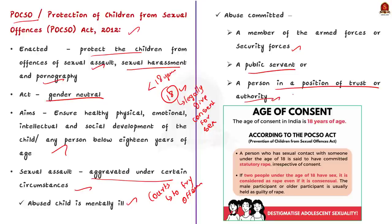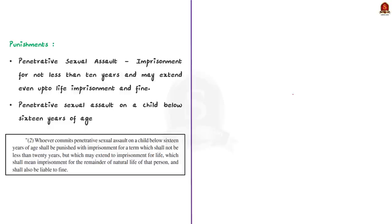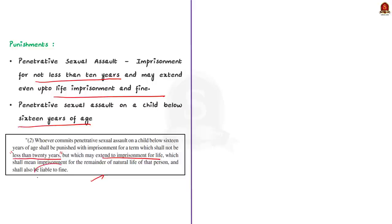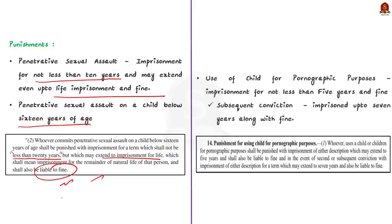Coming to the punishments under the Act: penetrative sexual assault on a child can lead to imprisonment of not less than 10 years and may extend up to life imprisonment and a fine. Whoever commits penetrative sexual assault on a child below 16 years of age shall be punished with imprisonment of not less than 20 years, which may extend to life imprisonment, in addition to a fine. The Act also states that use of a child for pornographic purposes can lead to imprisonment of not less than 5 years and a fine.